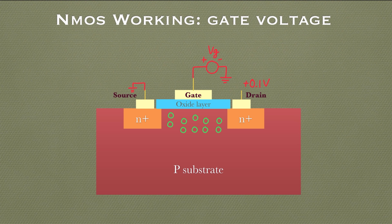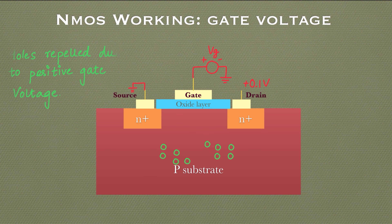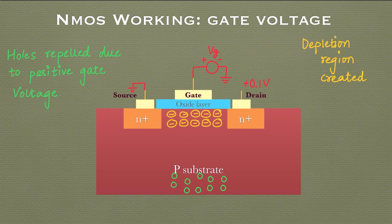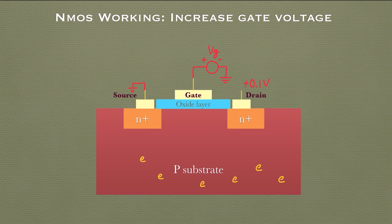When we apply a small gate voltage, the holes shown in green below the gate terminal get repelled due to the positive gate voltage. They move towards the P-type substrate, creating a depletion region just below the gate terminal. Further increasing the gate voltage also causes electrons from the P-type substrate to be attracted towards the region below the gate area.